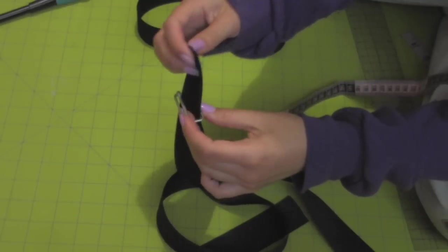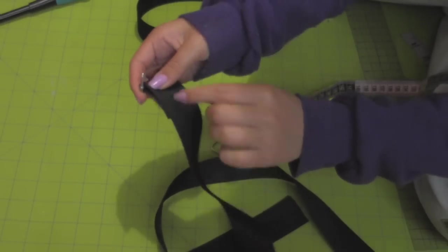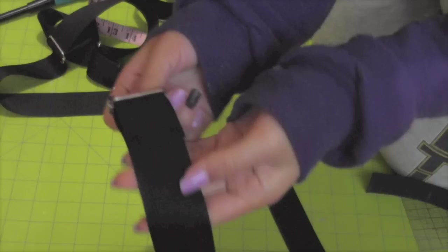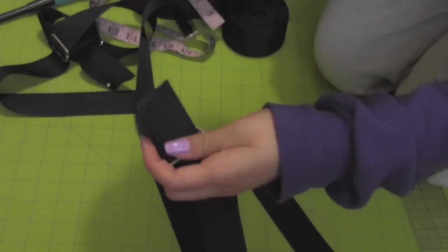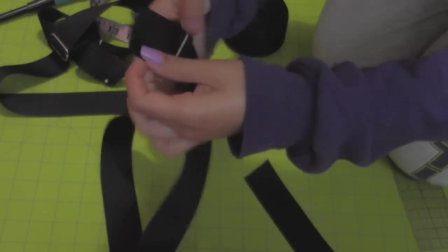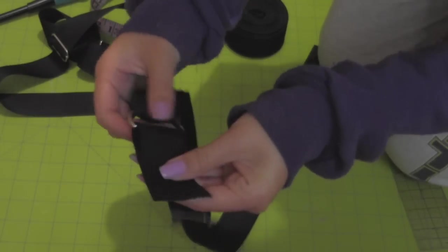Slip the long strip in the middle loop and sew together. Now slip the other loop through the long strip. Now slip the other strip through the bottom loop and sew.